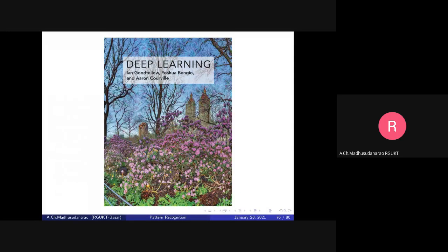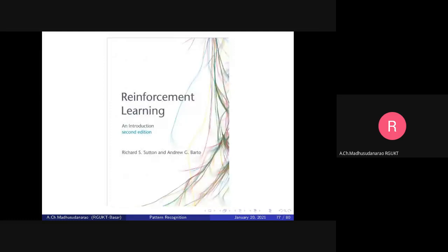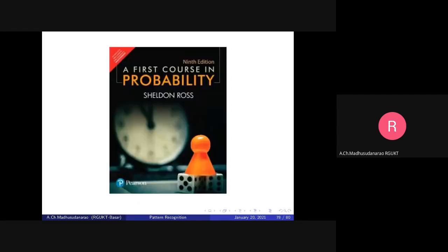This textbook is up to date till 2016. And if you want to go further into automation, you can try to have Reinforcement Learning by Sutton and Barto. And this is a good reference book for probability: Probability by Sheldon Ross.